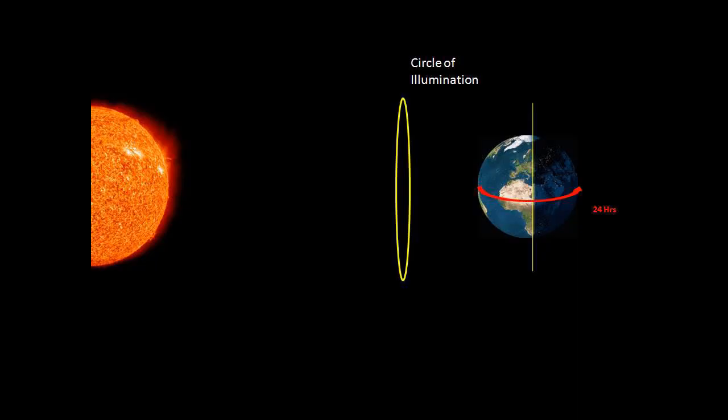Earth is spinning on its own axis. Due to its spherical shape, Earth receives sunlight only on one of its sides at a time, and this causes day and night. An imaginary line that separates day from night on Earth is called the circle of illumination. Since Earth is round in shape, this imaginary line is actually an imaginary circle — that's why we call it the circle of illumination. Also, Earth rotates from west to east and it takes 24 hours to complete one rotation.